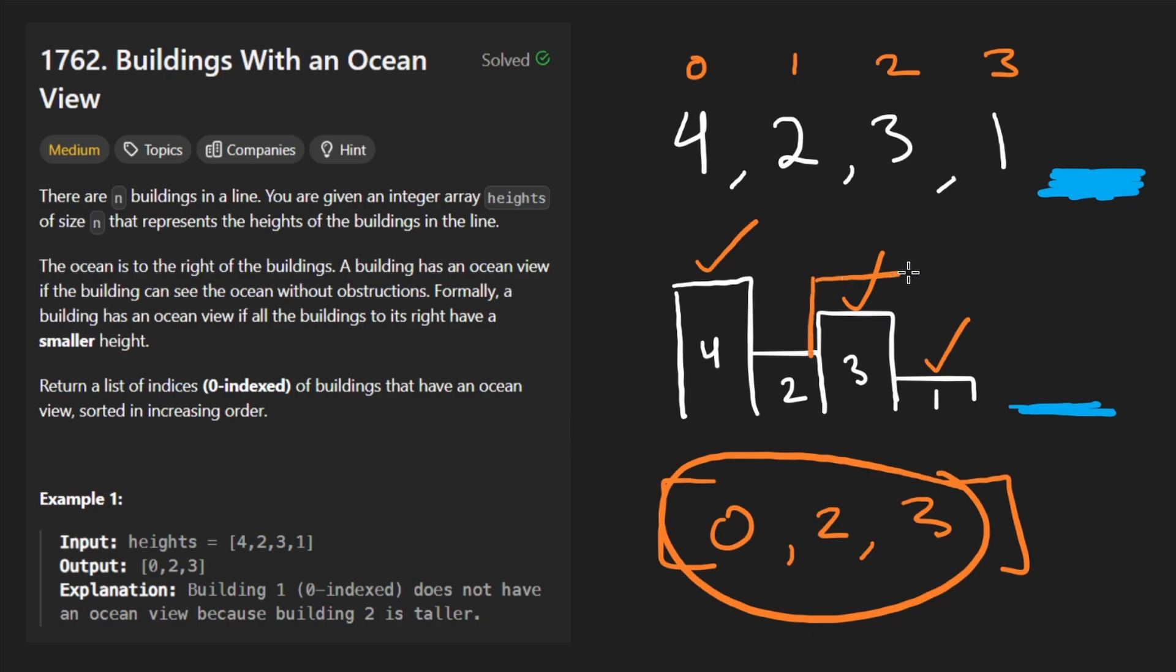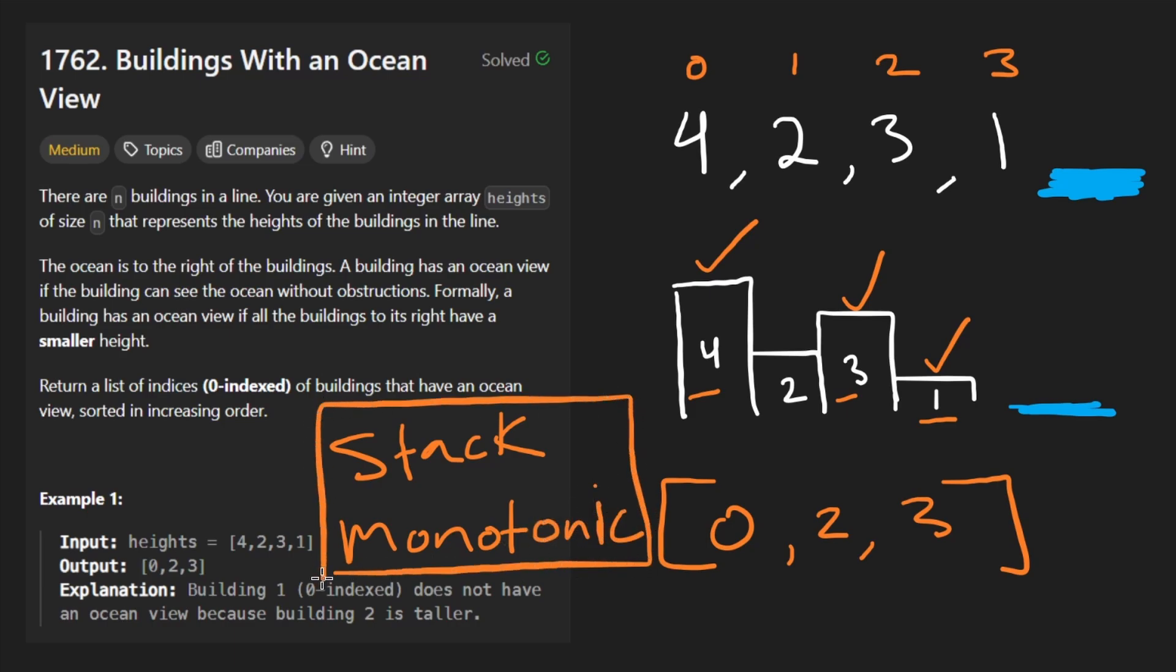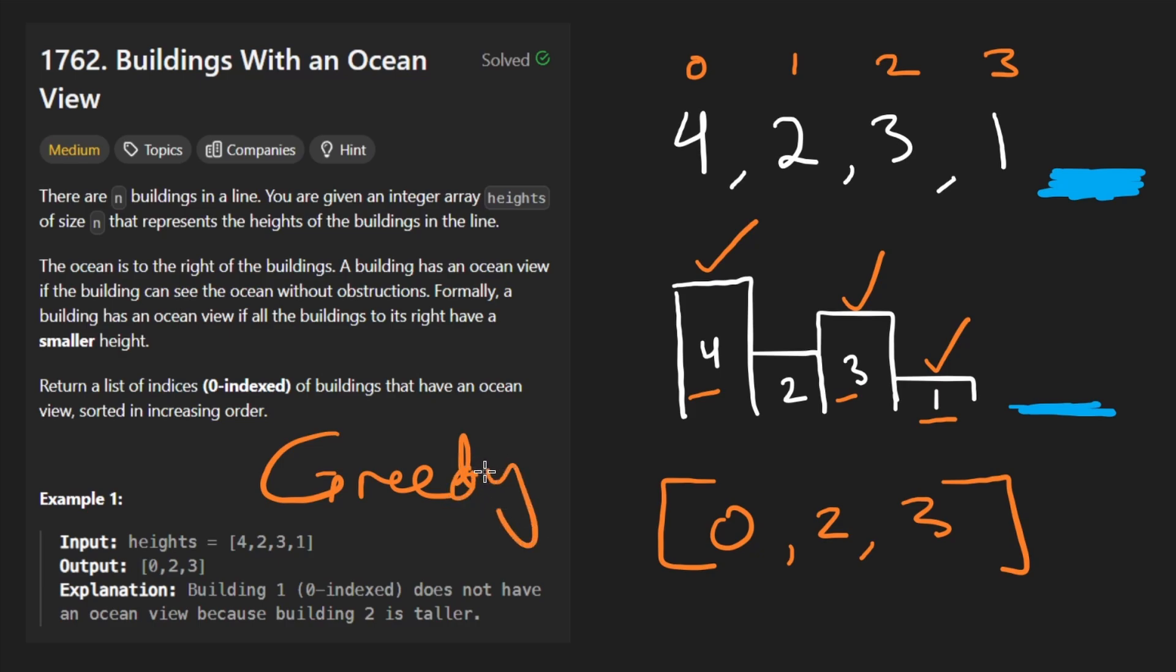So we expect that the heights of the buildings that we return are going to be strictly in decreasing order. They can't be equal because one of them wouldn't be able to see. That is the case. We have 4, then 3, then 1. One way to solve this problem is by using a stack, a monotonic stack. That is a very valid way to solve this problem. I won't be covering that one in this video because there's actually an easier way to do this. You could call it the greedy solution.